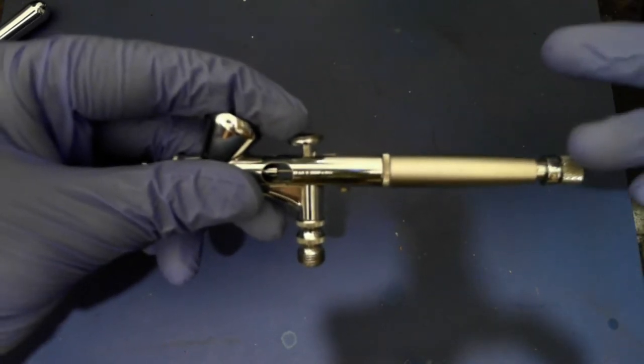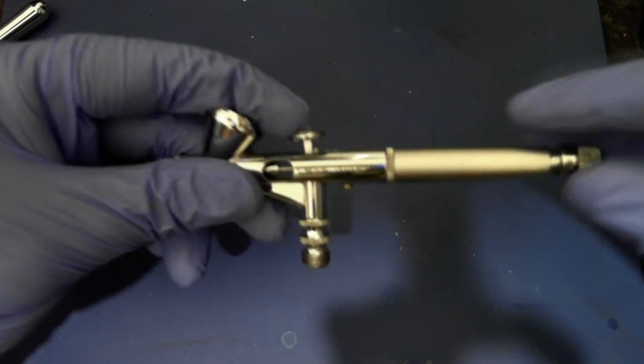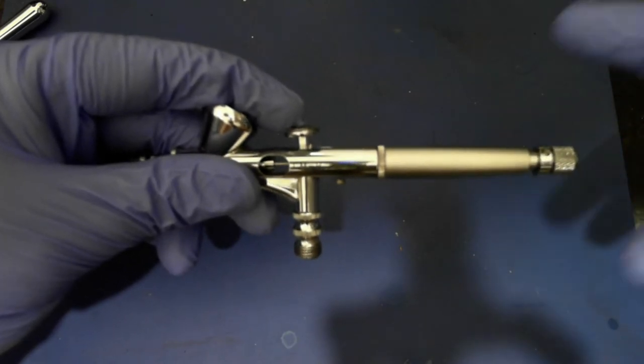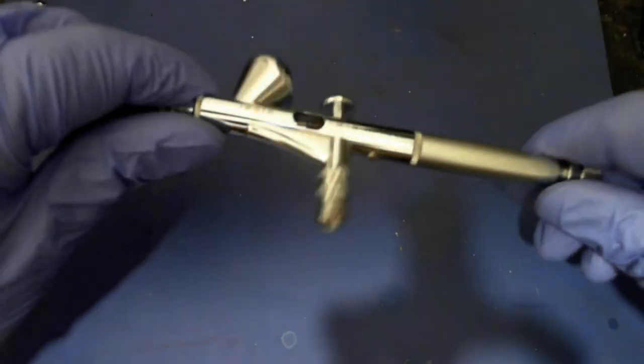With more backwards movement resulting in an increase in paint flow, this two-stage trigger action results in a more complex airbrush, with most using a separate needle.